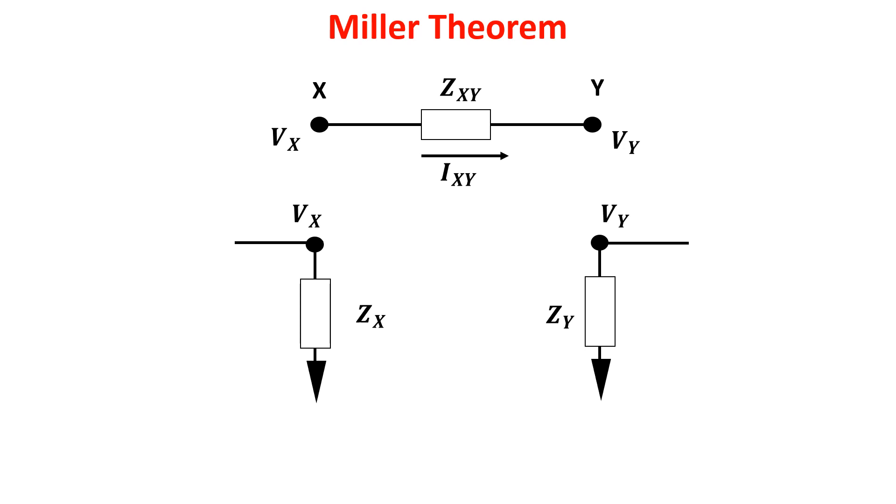So point X has voltage Vx as before, and the current Ix flowing through point X toward ground has to be equal to Ixy, which is by definition (Vx minus Vy) divided by the impedance Zxy. Sorting things out we get this, and dividing by Vx we get this one.